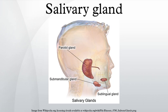The salivary glands in mammals are exocrine glands that produce saliva. They also secrete amylase, an enzyme that breaks down starch into maltose.